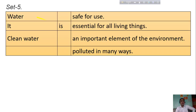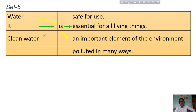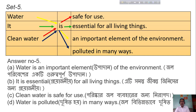Let's see the other table. Set 5. Water is an important element of the environment. It is essential for all living beings. Clean water is safe for us. Clean water can be polluted in many ways. We have to see the answer scripts now. I think the Bengali meanings will help you to practice this properly.